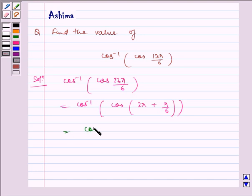Which is equal to cos inverse of cos of π by 6, because cos of 2π plus theta is equal to cos theta.